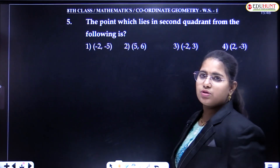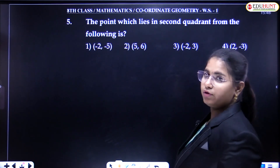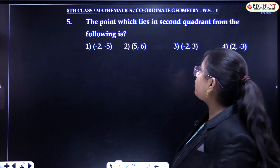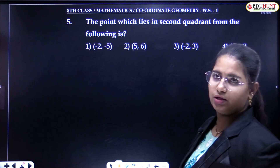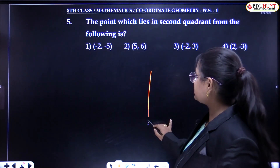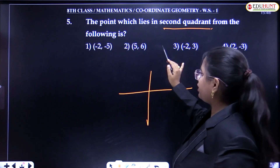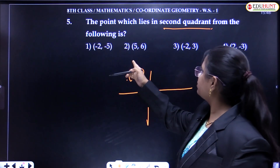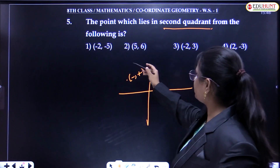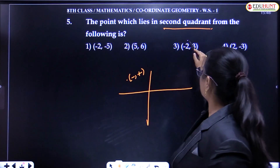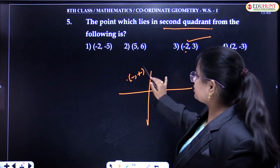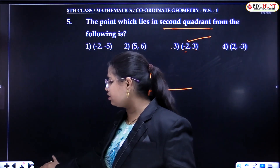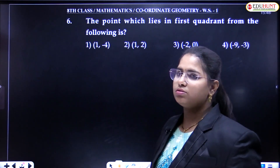These are all concept-based questions you can solve on your own if you are thorough with the concept. Next question: which point from the following lies in the second quadrant? In the second quadrant, X is negative and Y is positive. Checking the options — one has both negative, another has both positive. The option where X is negative and Y is positive satisfies the condition, so option 3 is the answer. That point lies in the second quadrant.